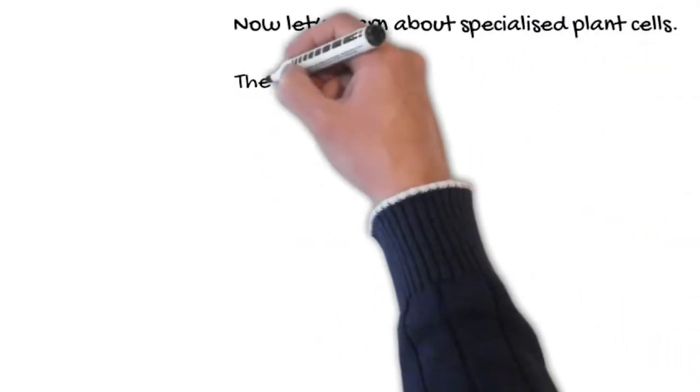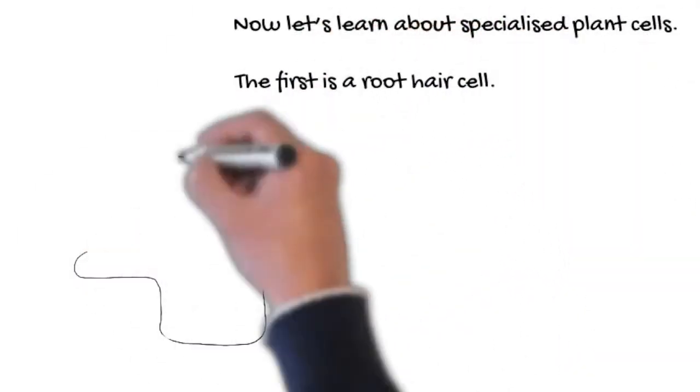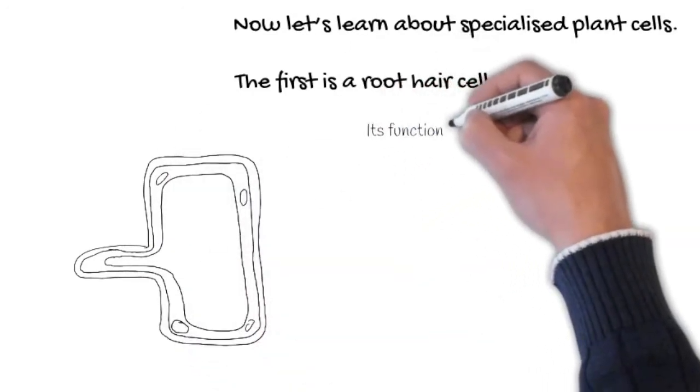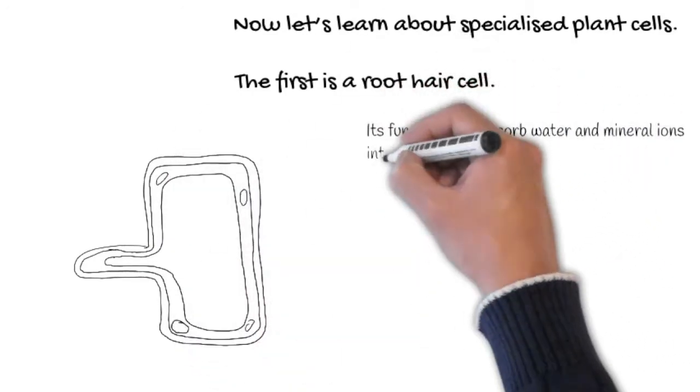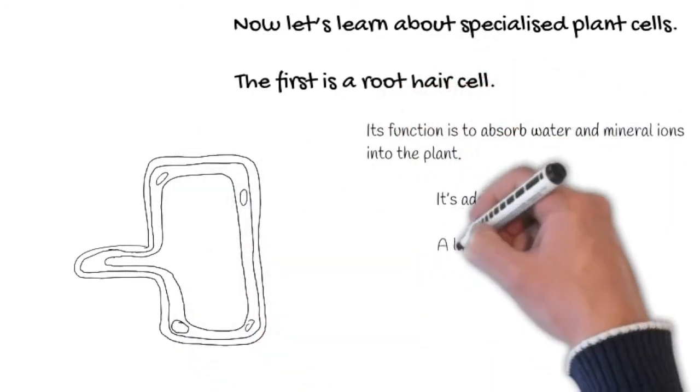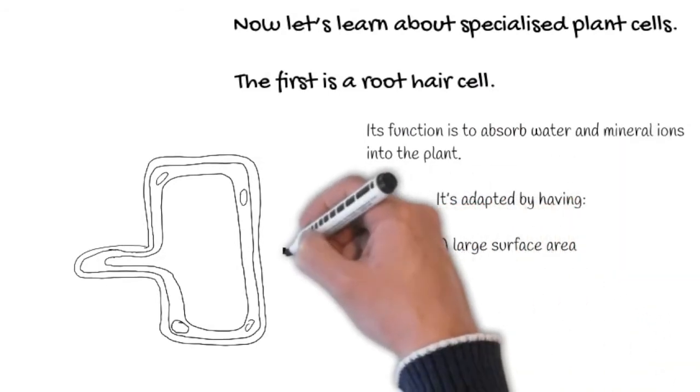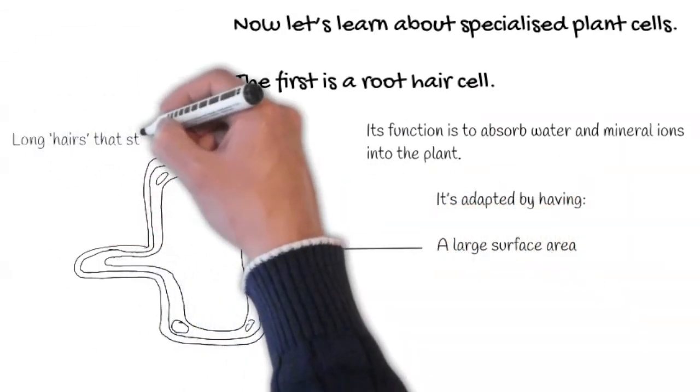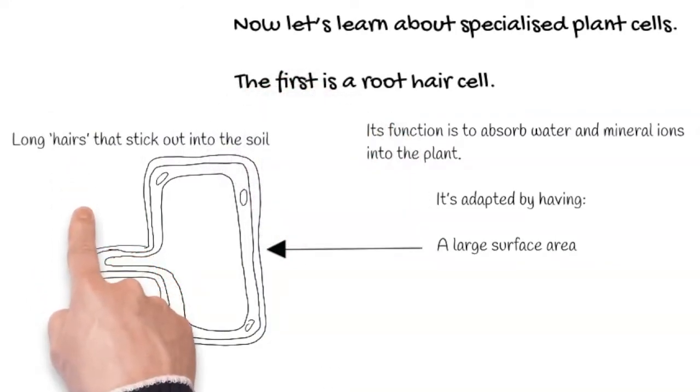Now let's learn about the specialised plant cells. The first is the root hair cell, and it looks like this. Its function is to absorb water and mineral ions into the plant from the soil. It is adapted by having a large surface area. Long hairs stick out into the soil.